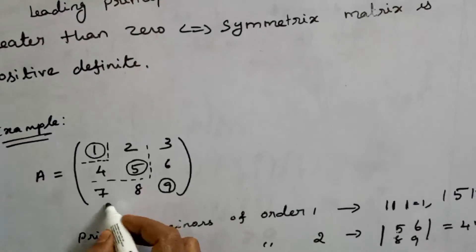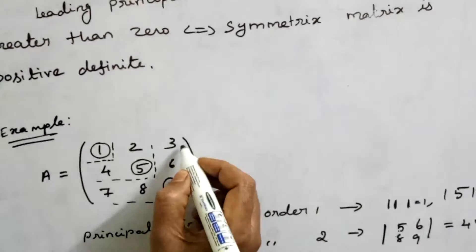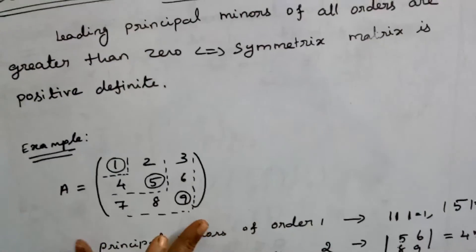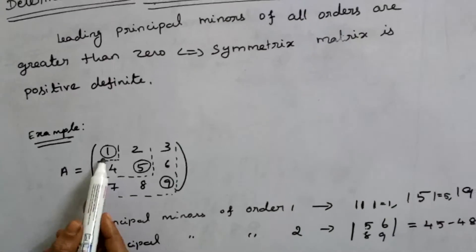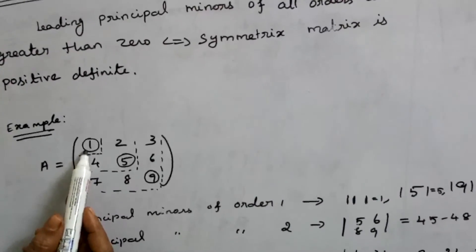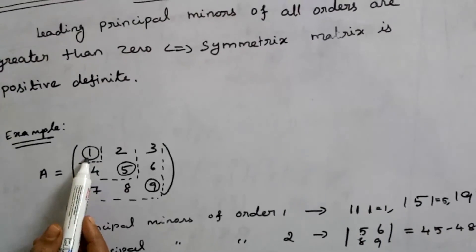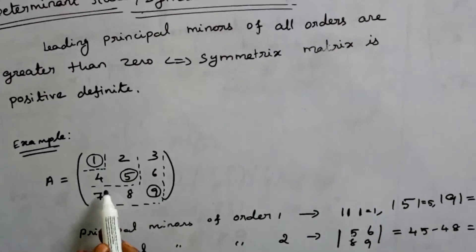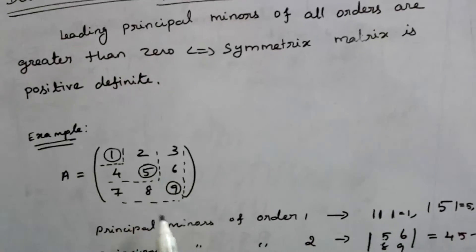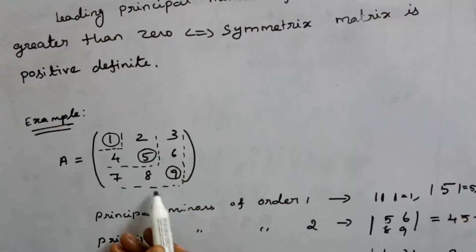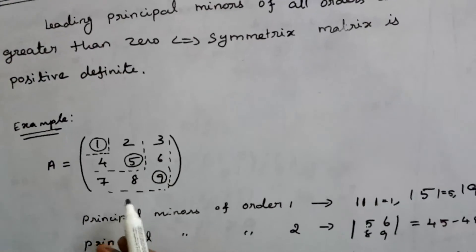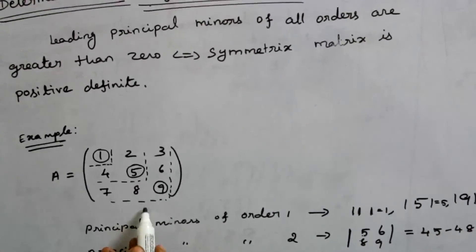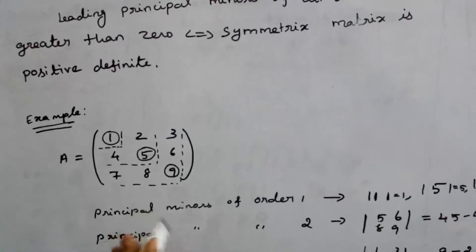The leading principal minor of order 1 is the first element. The leading principal minor of order 2 is the determinant of the top-left 2 by 2 submatrix. The leading principal minor of order 3 is the determinant of the whole matrix A. A symmetric matrix is positive definite if all these leading principal minors are positive.